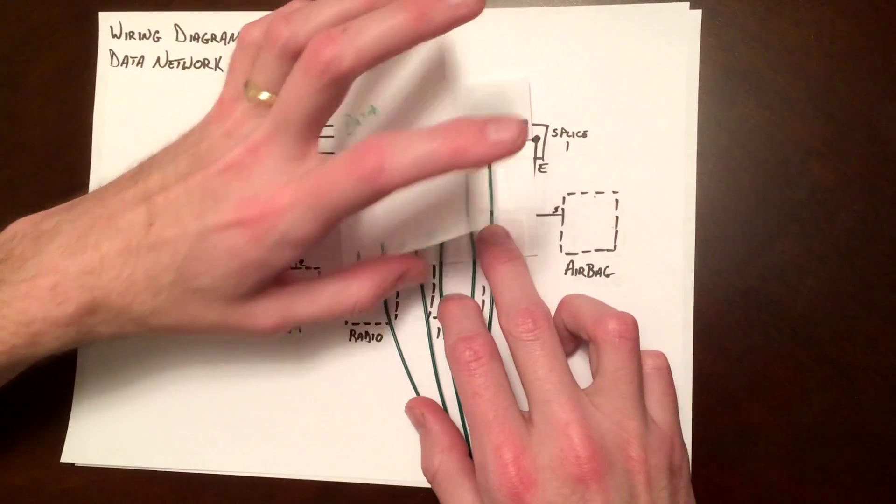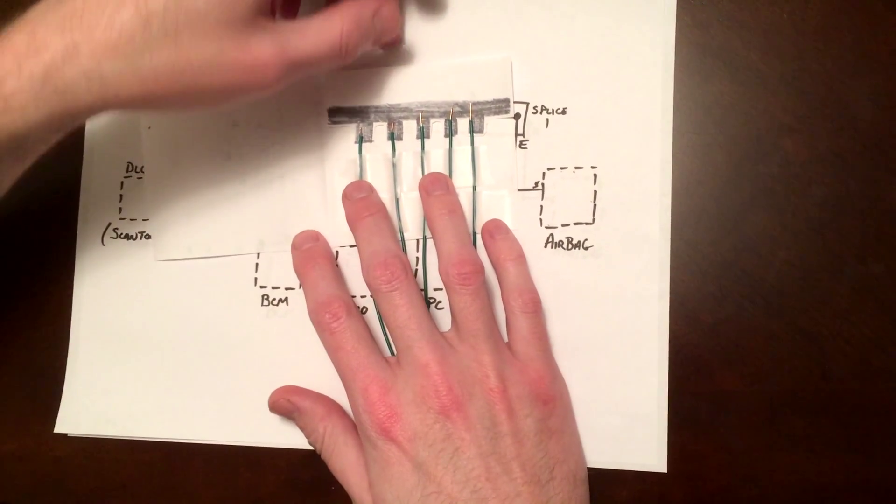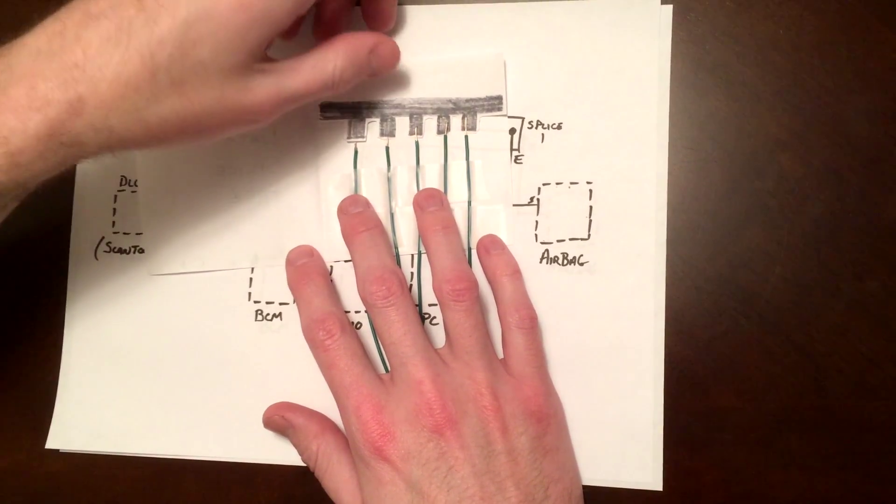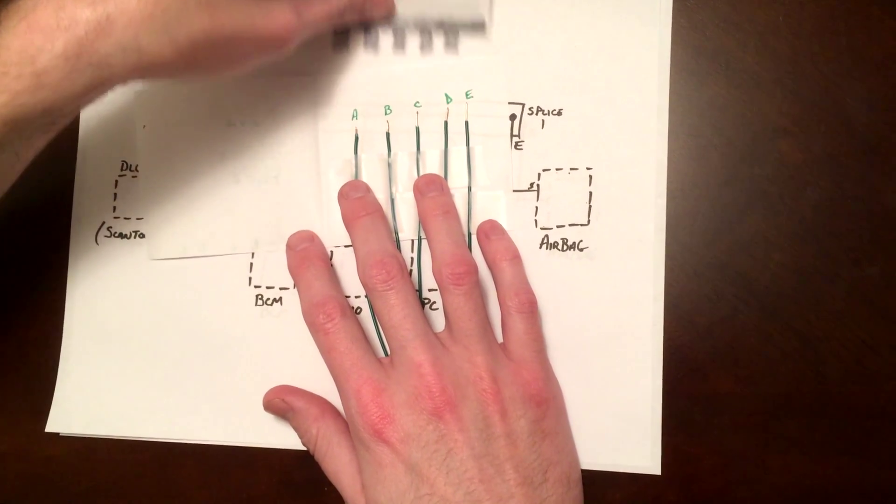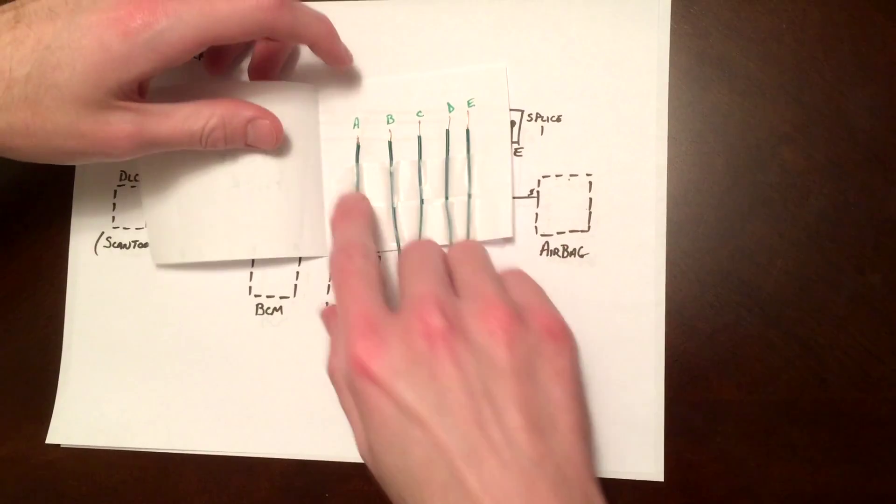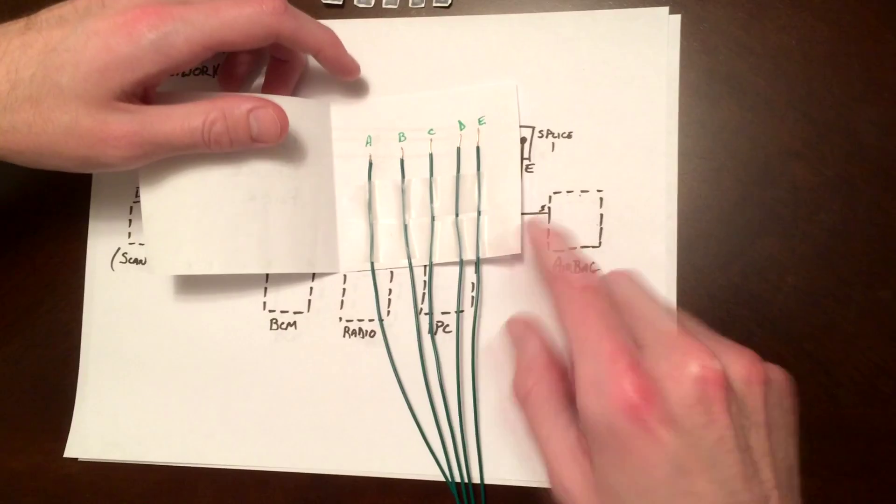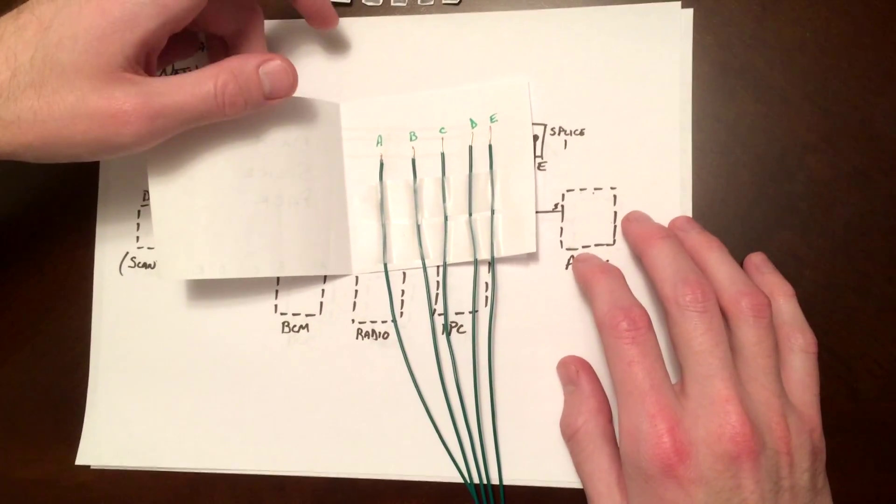Here I have an example. Inside the splice pack, you'll have a comb. It's just a metal comb, and when you pull that out, you'll have individual connections to each of your modules, and all of them will be isolated.